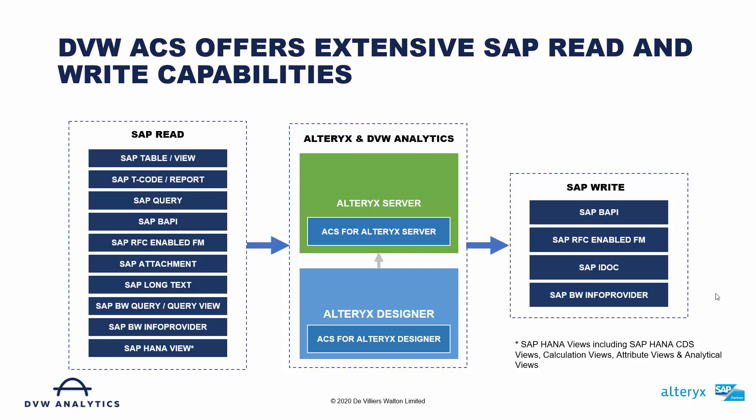In addition to that, we have the ability to extract data through SAP BAPIs as well as RFC-enabled function modules. We also support PDFs, Word documents, image files, and text files linked to master data or transactional data objects within the SAP system. The SAP attachment capability allows us to identify where objects have attachments, extract those attachments into Altrix, and then recompile those original files into a location where they can be reviewed.